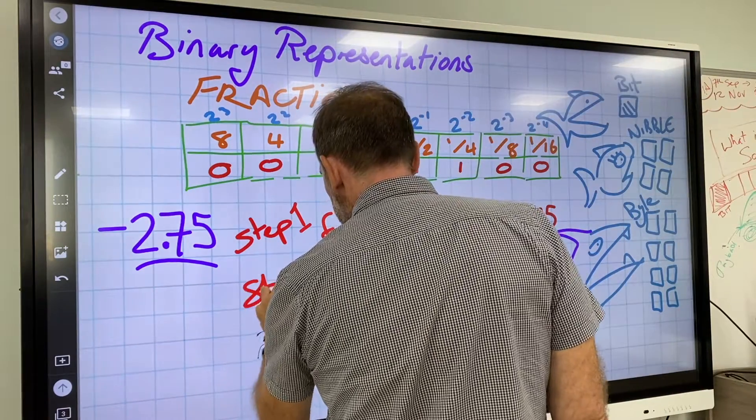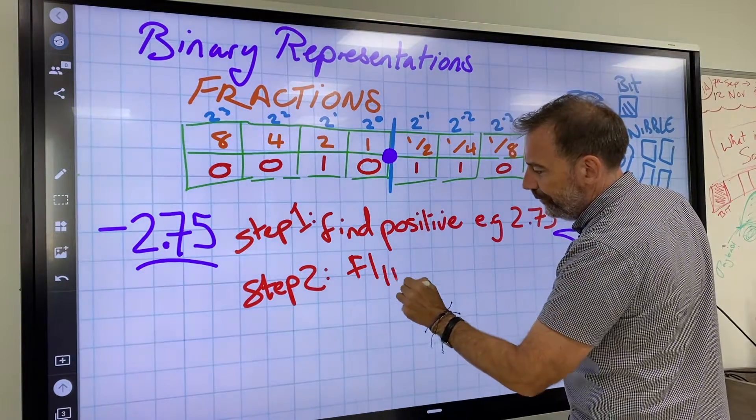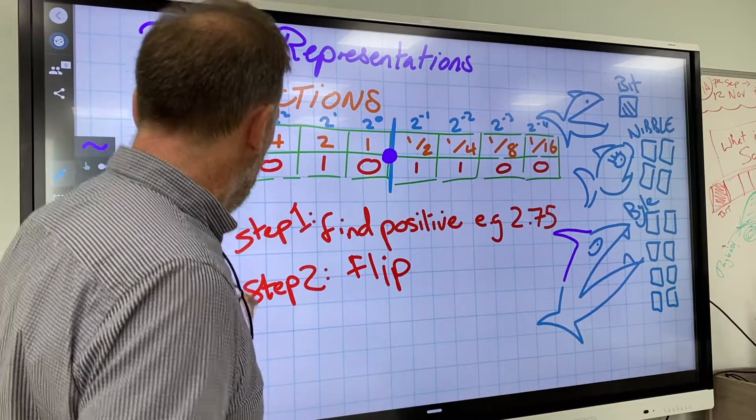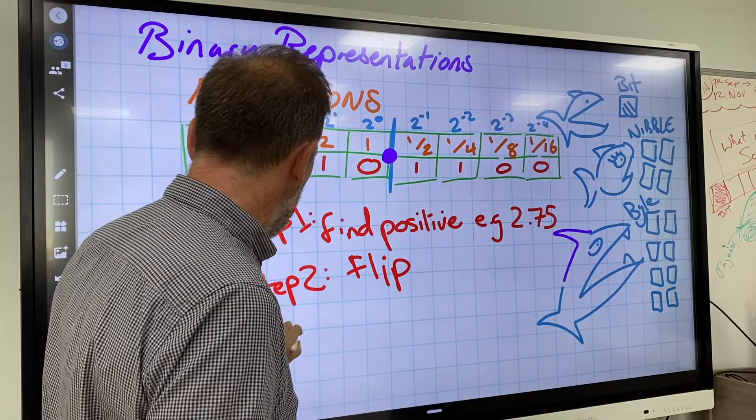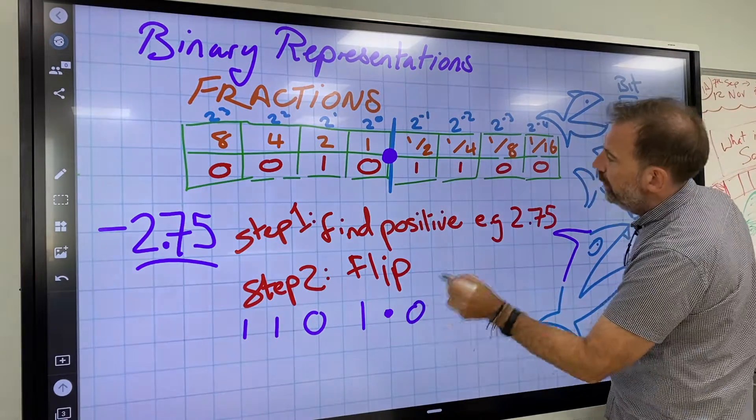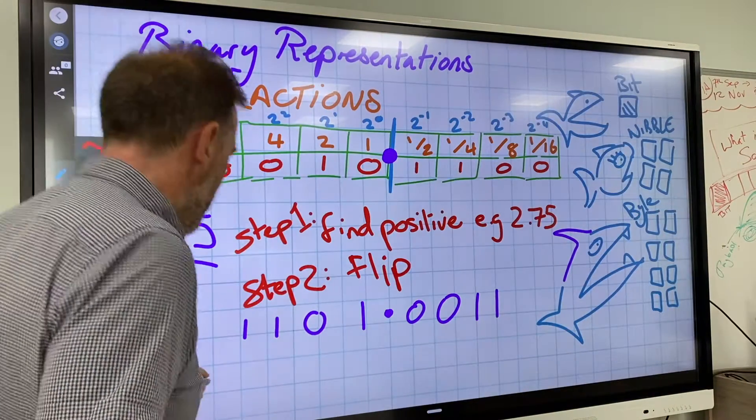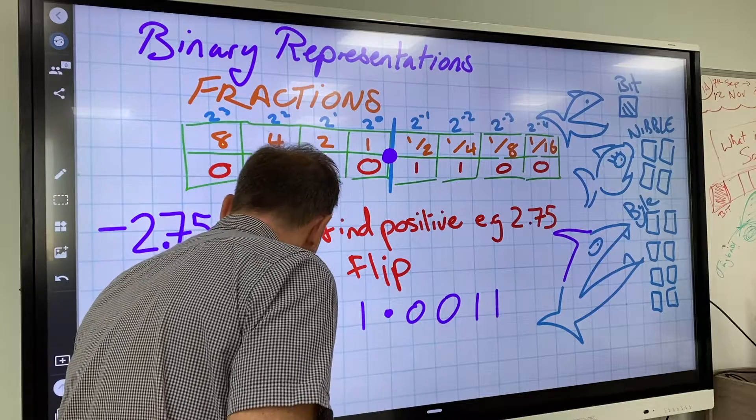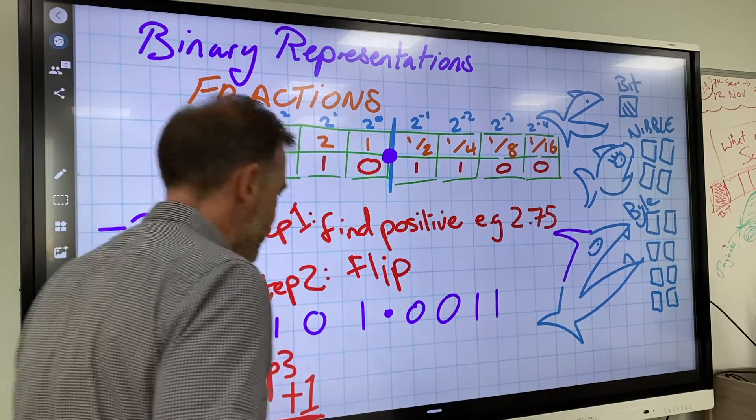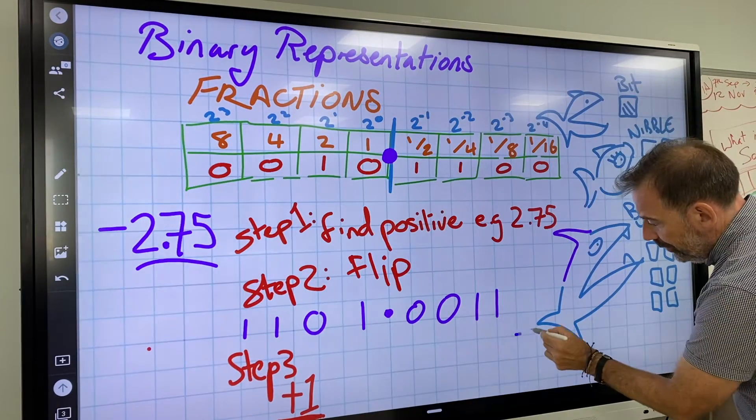Step 2: Flip. So now I've got 1101.0011. Step 3: Add 1. This is binary addition. I'm going to add 1 to this.